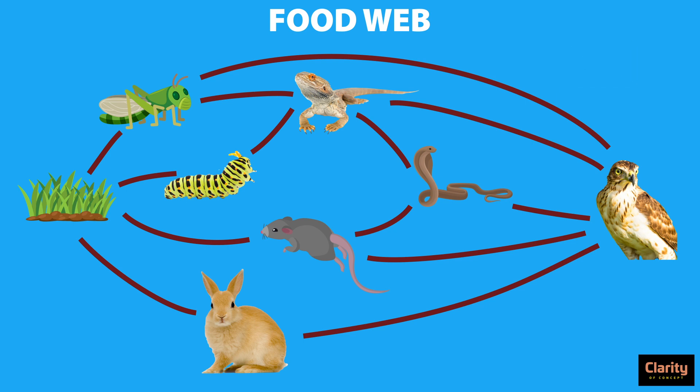Food web properly represents the trophic patterns and their interdependence in an ecosystem, whereas a food chain is a simple, isolated way of representing energy transfer. Thank you for watching — join our Telegram channel for supplementary notes. Subscribe to our channel, Clarity of Concept.